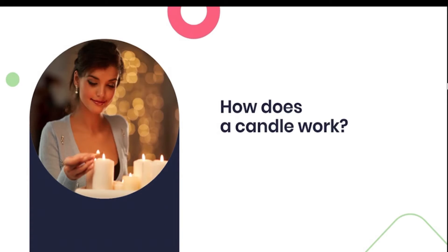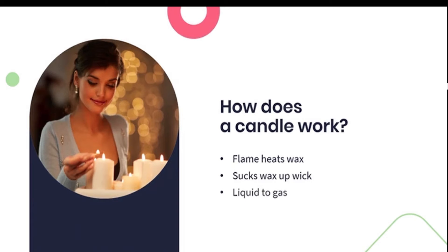As a candle is lit, the flame heats the wax surrounding the wick and essentially sucks the molten wax up the wick. The high temperature of the flame warms this liquefied wax, causing it to transform into a gas. This in turn causes the hydrogen and carbon to begin breaking down. The reaction between these elements and the oxygen they encounter is what causes heat and light to become apparent.